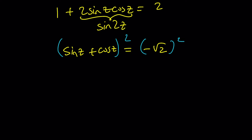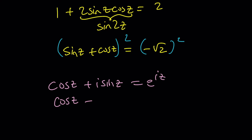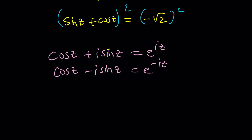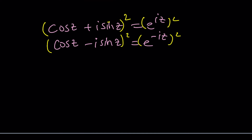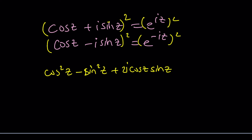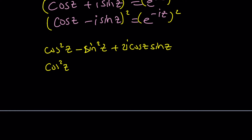Given that cosine z + i·sine z = e^(iz) and cosine z − i·sine z = e^(−iz), another alternative is to square both equations. When you square them, you get cosine² z − sine² z plus 2i·cosine z·sine z. The second equation gives the same thing with a minus sign. Adding these equations gives you the difference between cosine squared and sine squared, so it may not be the most direct path, but you could get somewhere from here.